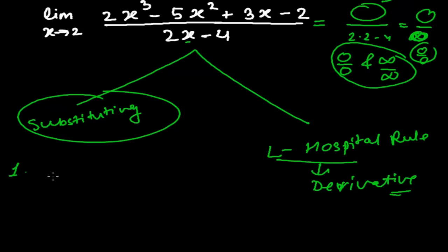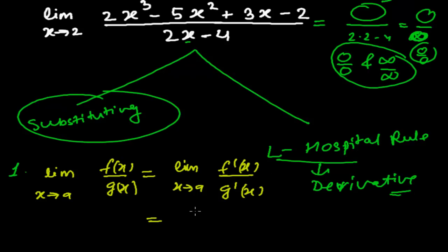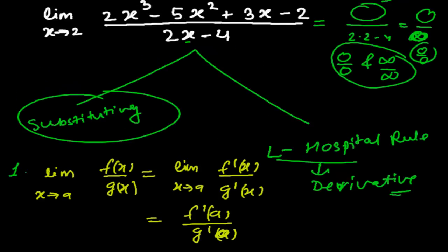The L'Hôpital rule states: the limit as x tends to a of f(x) upon g(x) equals the limit as x tends to a of the derivative of f divided by the derivative of g, and then plug in the value — f(a) over g(a). So first find the derivatives of both the numerator and denominator, then plug in the value of x. If you don't know this, we'll do the substitution method after.